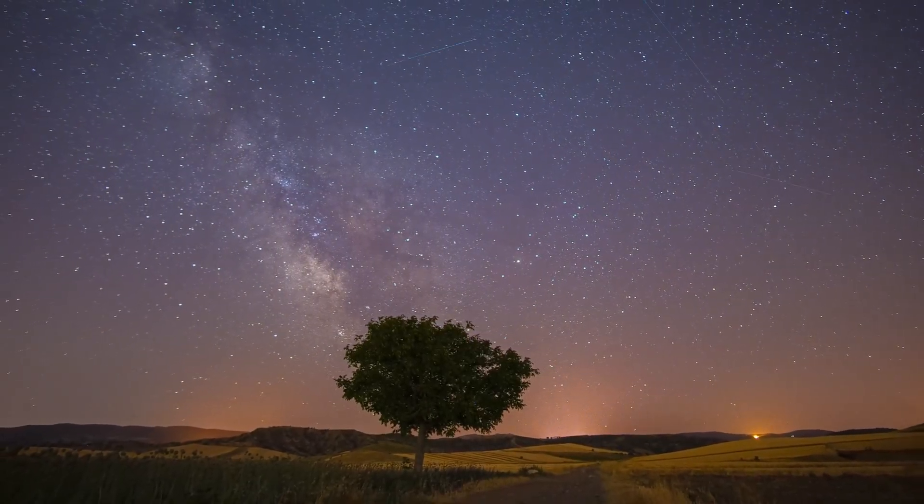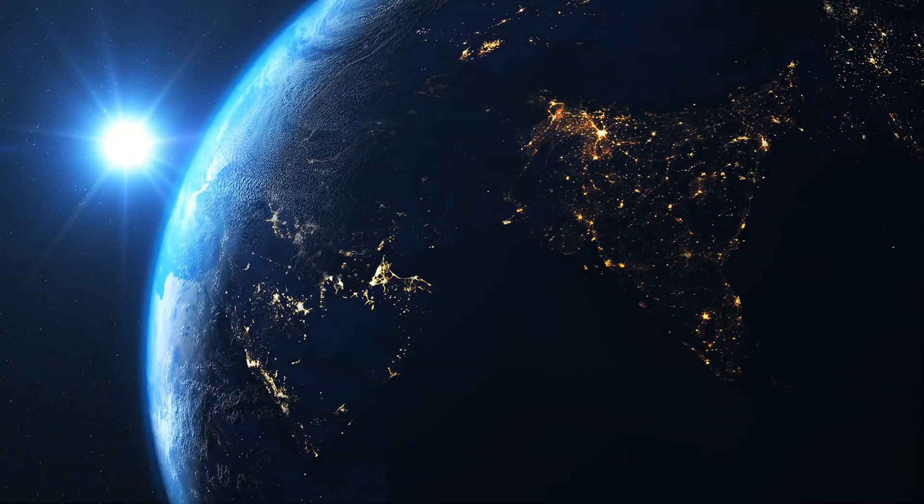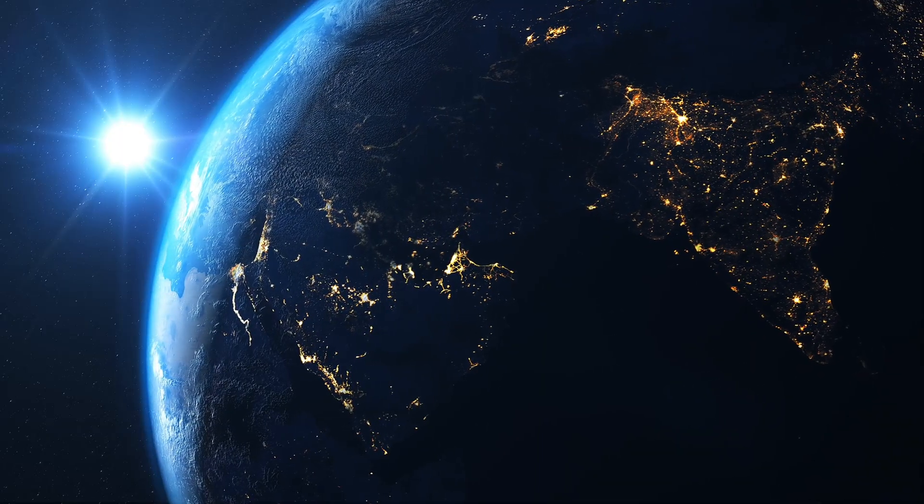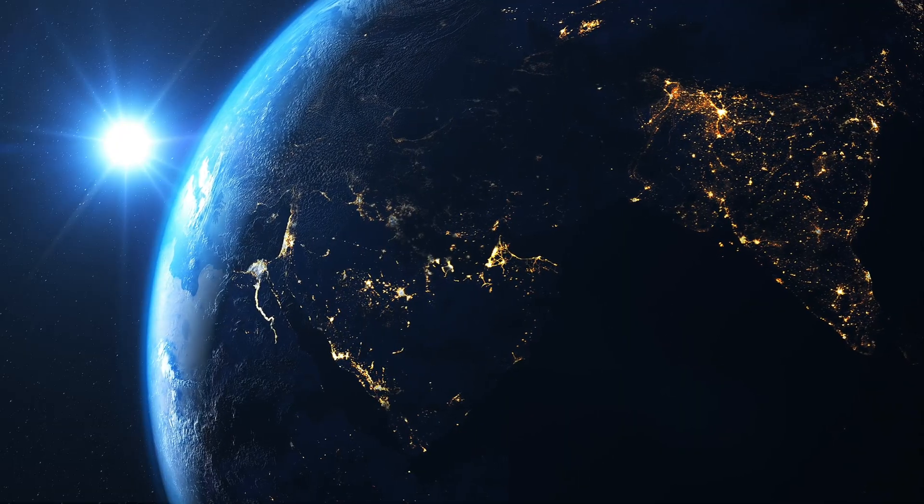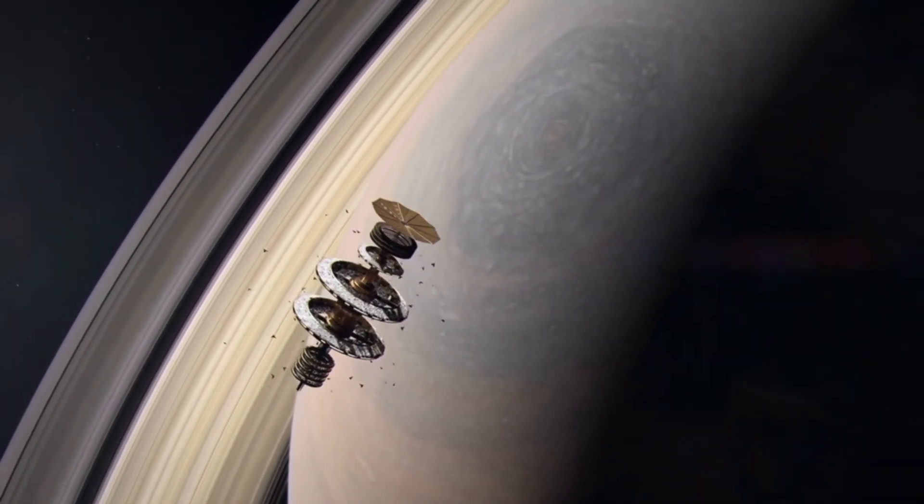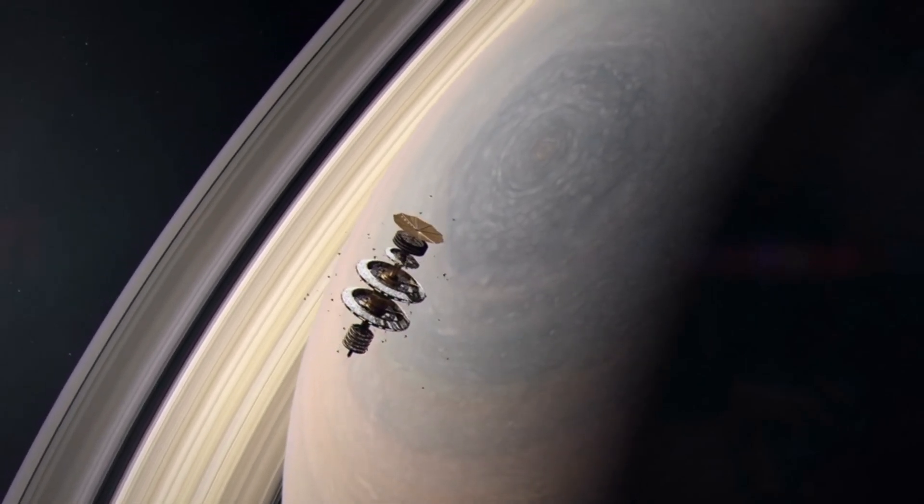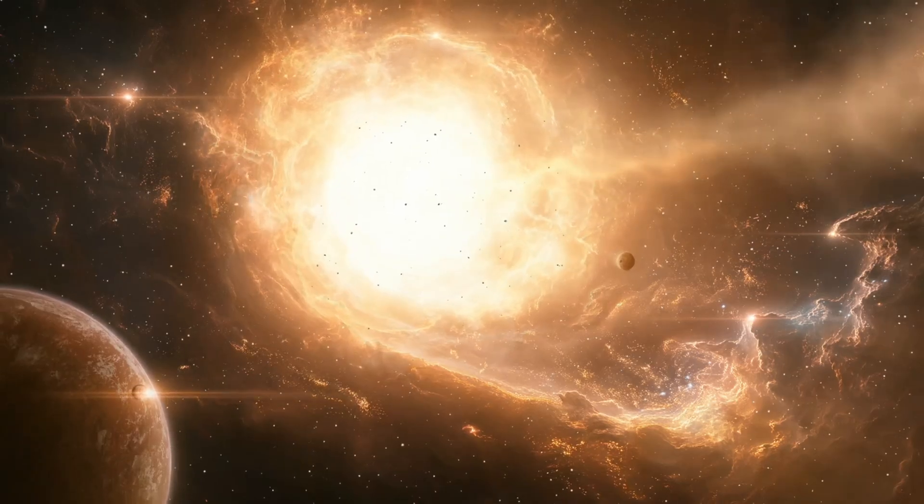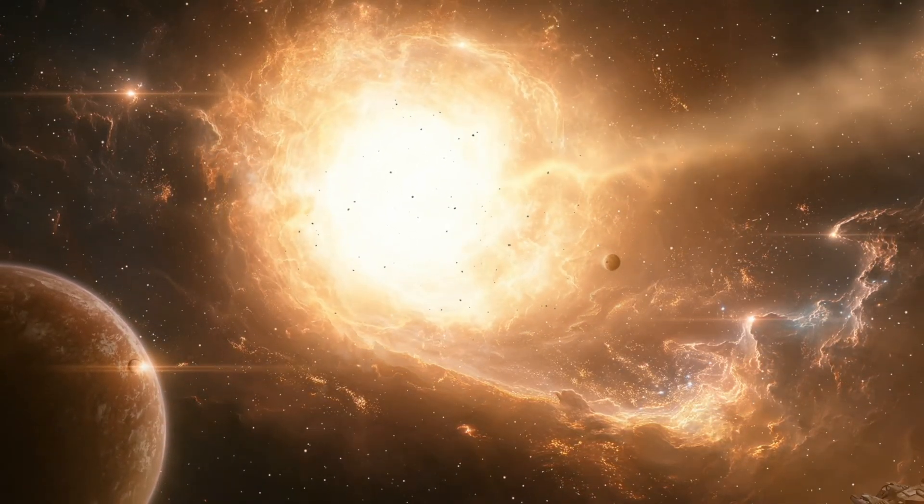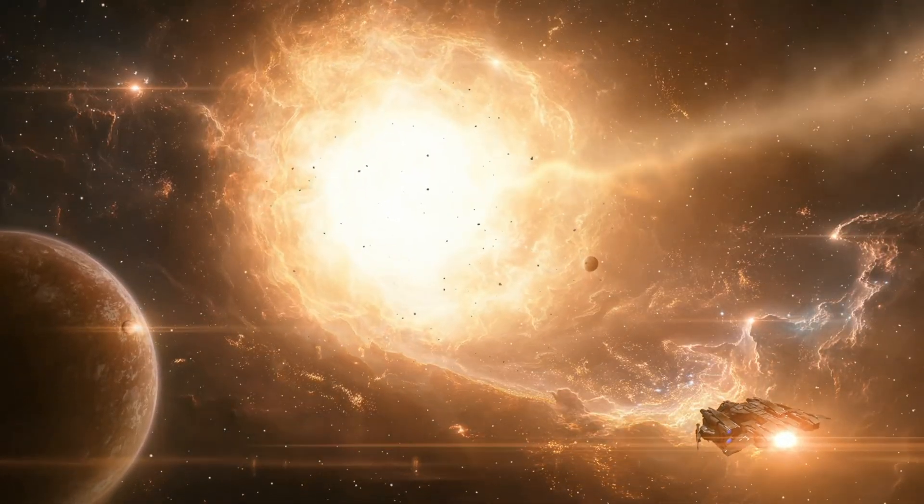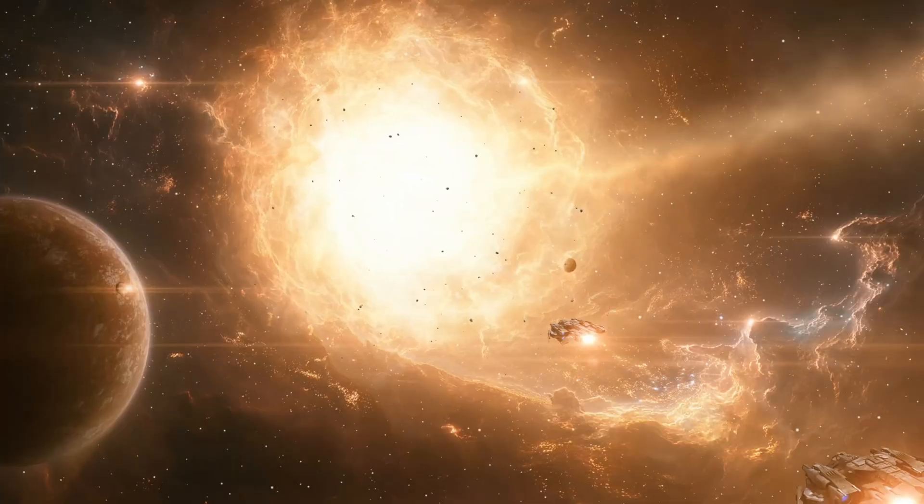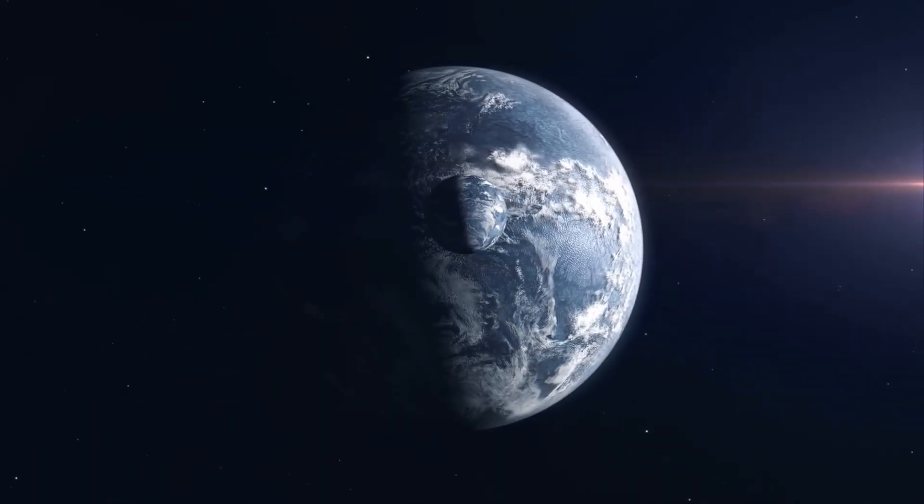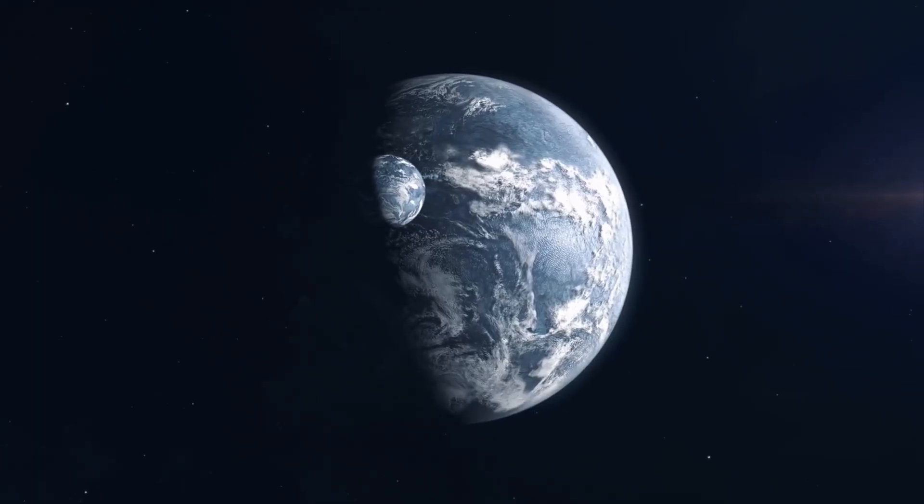We began with a simple question: What is the true scale of the universe? Now we can answer, but not with a single number. The universe is 93 billion light-years across, at least. It's 13.8 billion years old, at least. It contains two trillion galaxies and more stars than grains of sand on every beach of Earth. And still, that may only be the smallest part of an infinite whole. But the true scale of the universe isn't just its size. It's what that size does to us. It changes how we think, how we feel, how we see ourselves. It reminds us that we are part of something vast, not separate from the cosmos, but expressions of it, made from its dust and shaped by its laws.